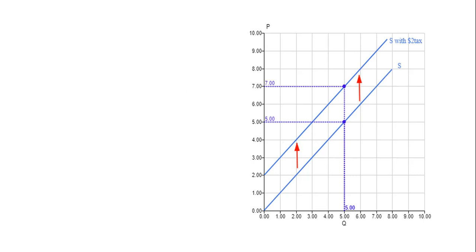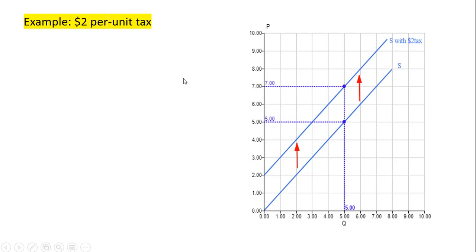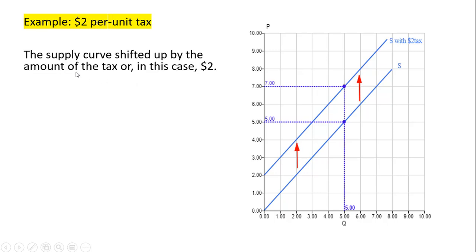Here is the graphical look at how we analyze taxes placed on sellers. We shift up the supply curve vertically by the amount of the tax — this is just a parallel shift. So here at $5 before the tax, sellers would be willing to bring five units to the market. With a $2 tax, sellers will now need $7 to bring that same quantity to the market. The supply curve shifts up by that amount.